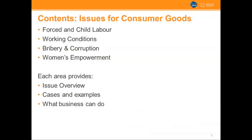This training will cover four different issues that are relevant for the consumer goods sector: forced and child labor, working conditions, bribery and corruption, and women's empowerment. Each area provides an overview of the issue, some cases and examples of how the issue may arise in the business world, and what we can do about it — some tips, tricks, and guidance on how to address these issues in your operations and your supply chain.